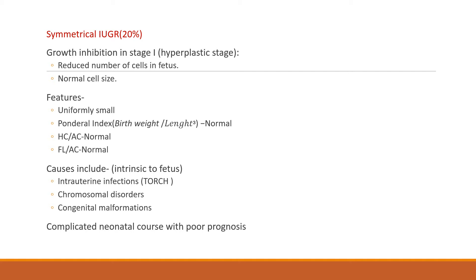In symmetrical IUGR, growth inhibition occurs in the hyperplastic stage, resulting in reduced cell number while cell size remains normal. Features include a uniformly small baby, normal ponderal index (birth weight divided by length cubed), and maintained ratios — HC/AC ratio and femur length/abdominal circumference ratio. Causes are intrinsic to the fetus, such as intrauterine infections, chromosomal disorders, and congenital malformations. It bears a complicated neonatal course with poor prognosis.